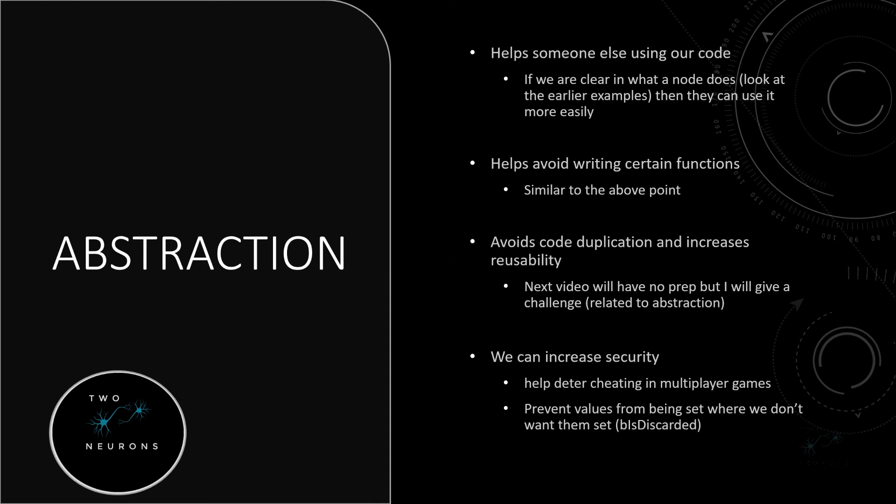And it helps increase security. There are a few types of abstraction: class abstraction and data abstraction. Think about the fact that we set B Is Discarded to private in our inventory — this prevents something else from setting it directly; we have to use getters and setters. This can help deter cheating in multiplayer games — it won't prevent it, but it can help. And it prevents values from being set where we don't want them set, giving us control over that.